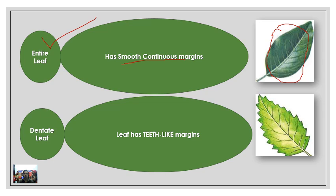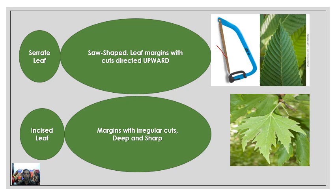The second type is the dentate leaf. 'Denta' means teeth. The leaf produces tooth-like projections along its margin. Here you can see these teeth-like sections produced by the leaf — such a leaf is called a dentate leaf.